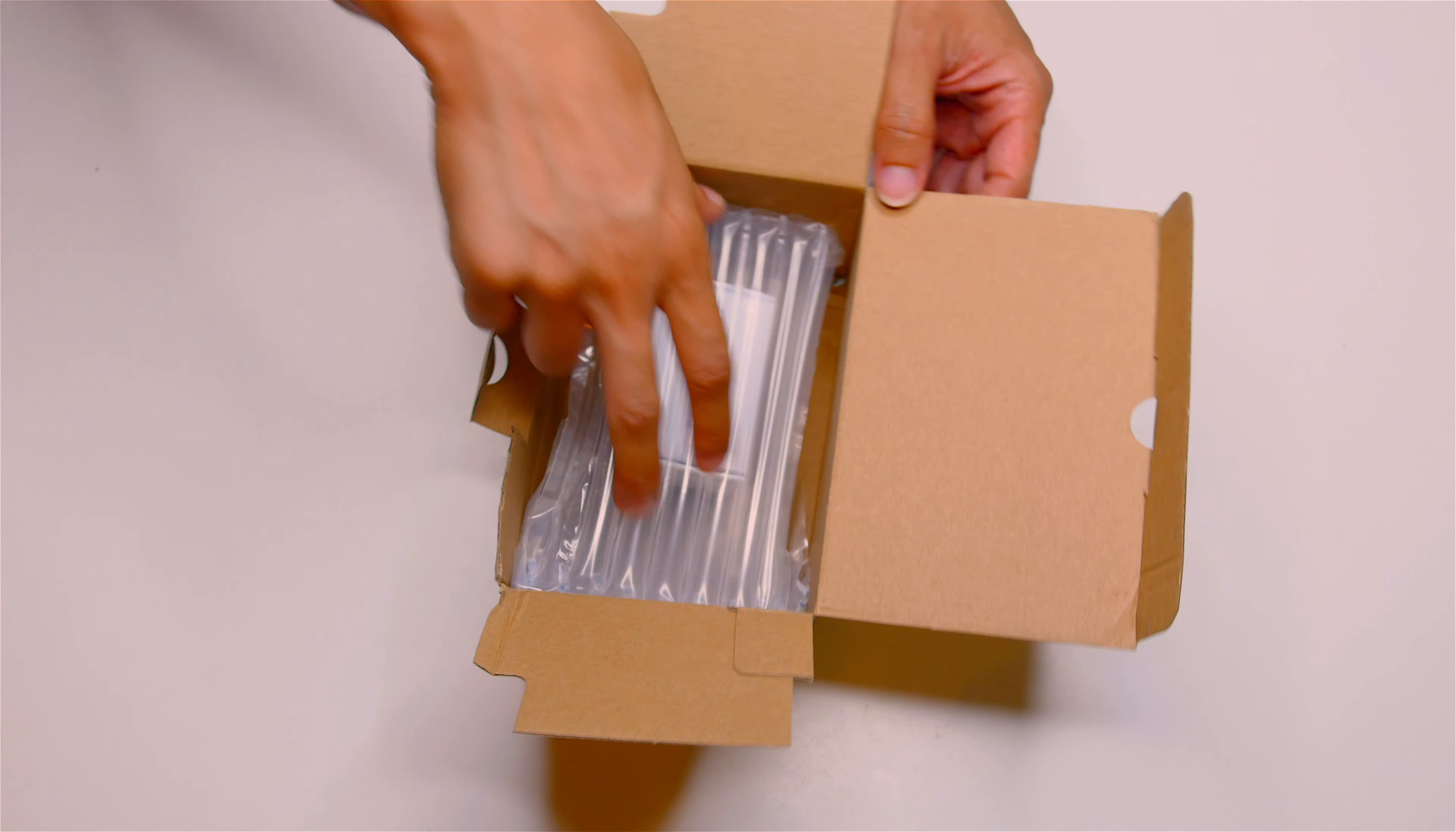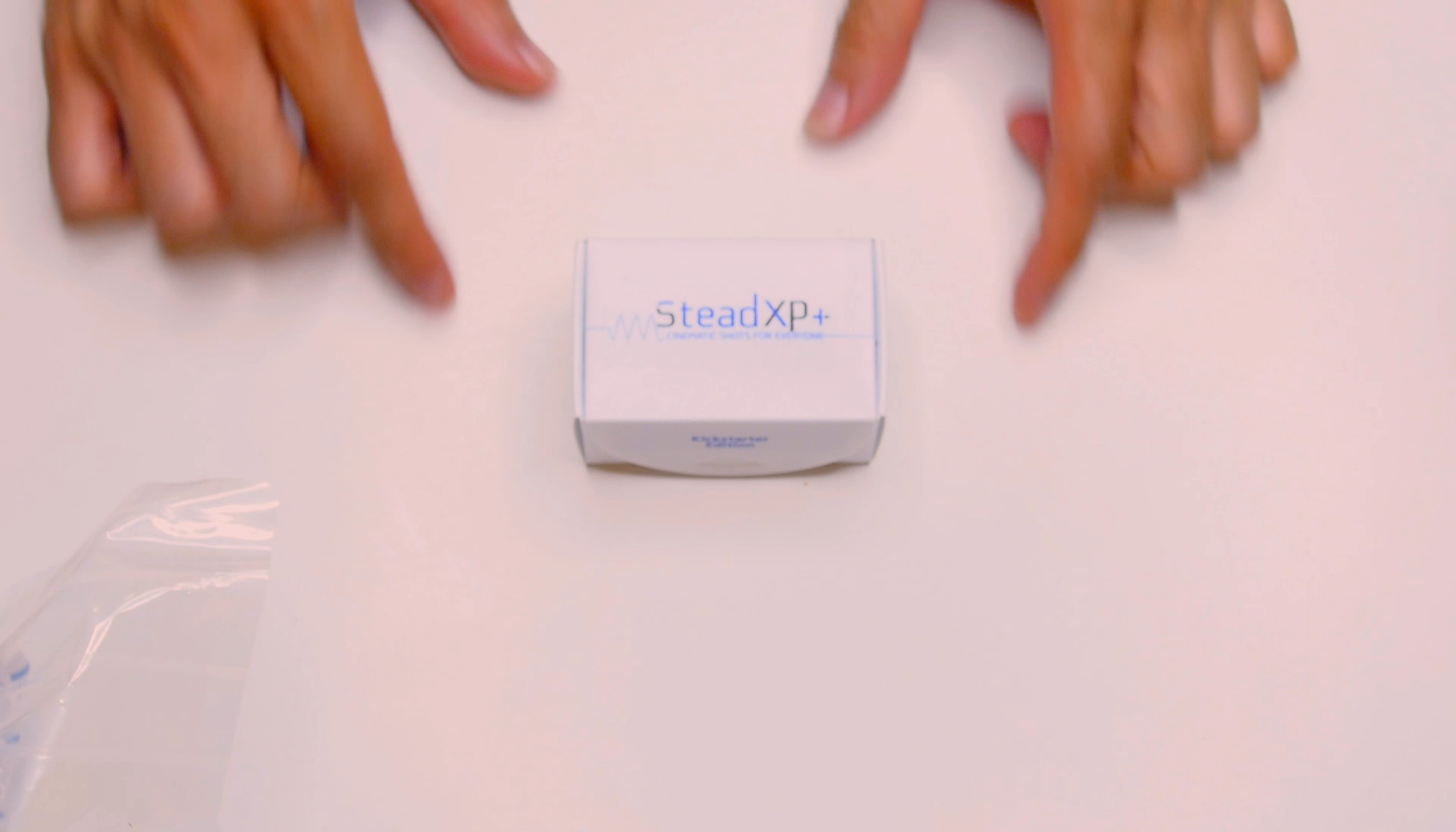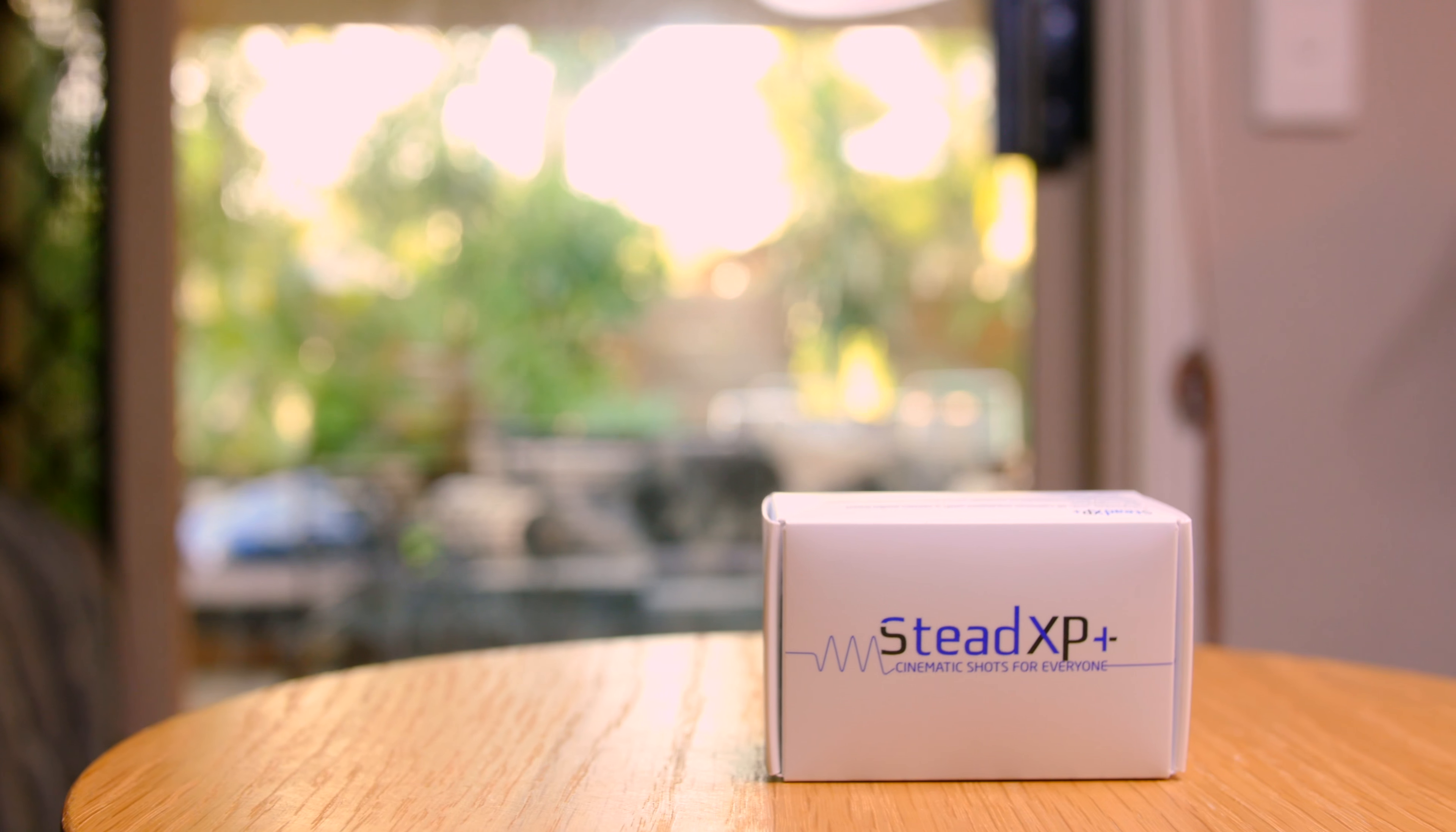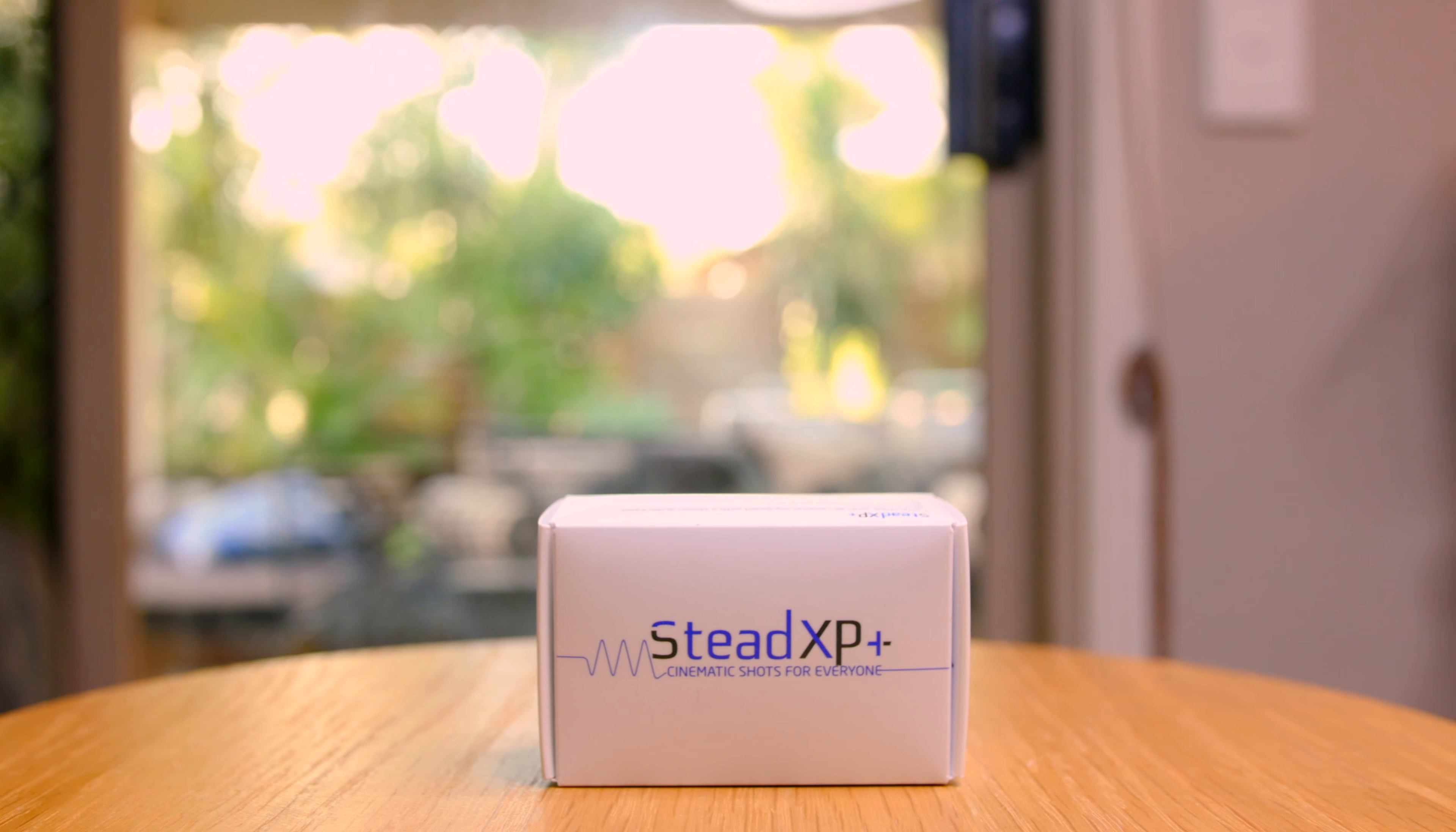Open it up. And we have the StedXP inside. I'm just going to pull this out. Take this out here. And there we go. That is the StedXP, guys. It's tiny. It's supposed to fit on top of the camera on the hot shoe mount.